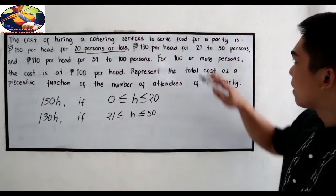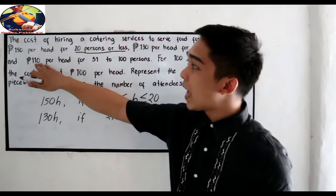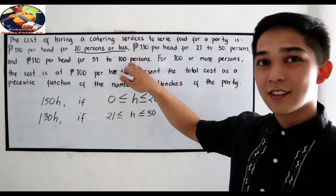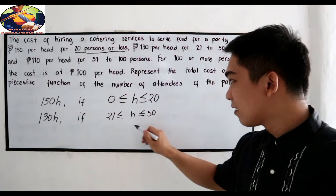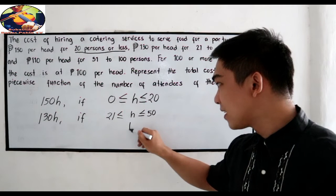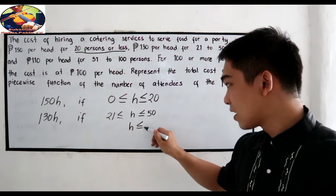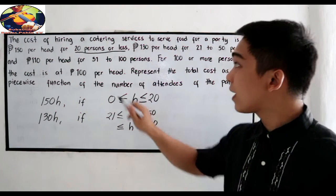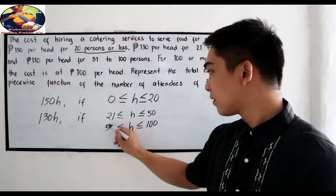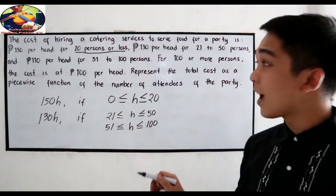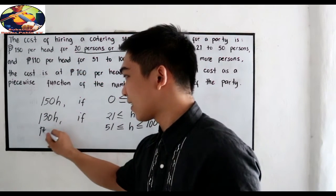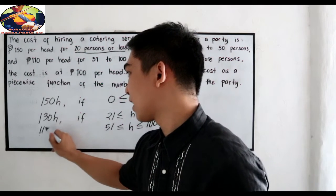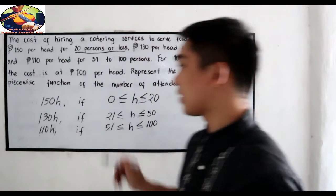Next: 110 pesos per head for 51 to 100 persons. So kapag ang attendees natin ay less than or equal to 100 pero mas malaki sa 51, ang babayaran ay 110 pesos per head. So ang cost ay 110h if that is our condition.